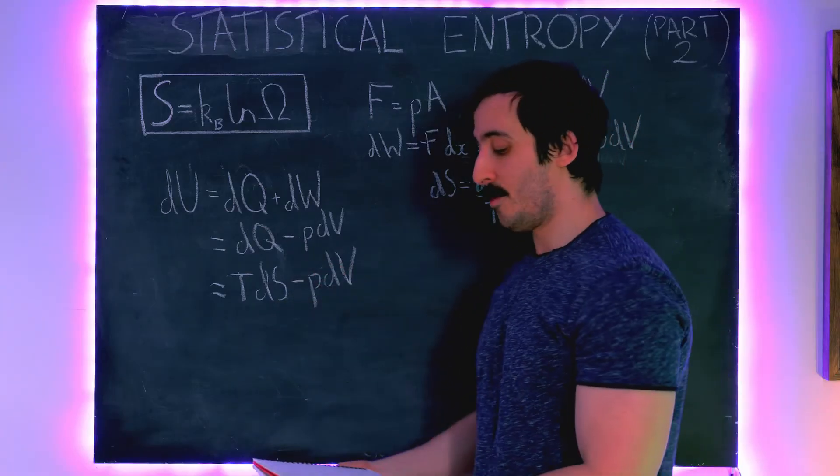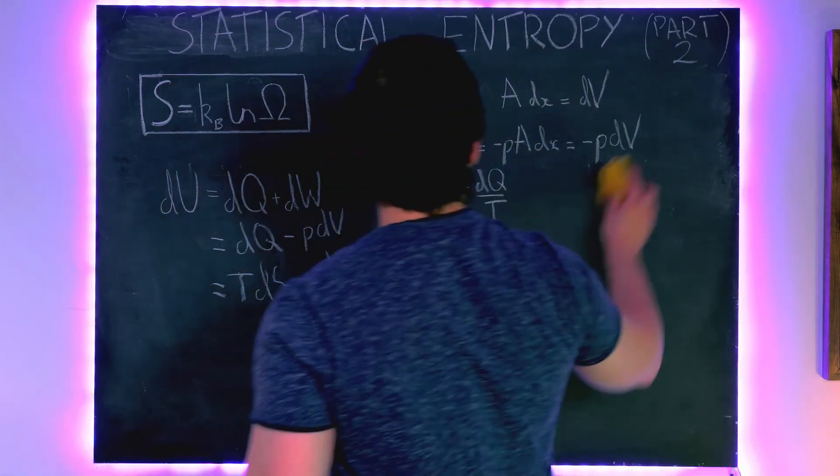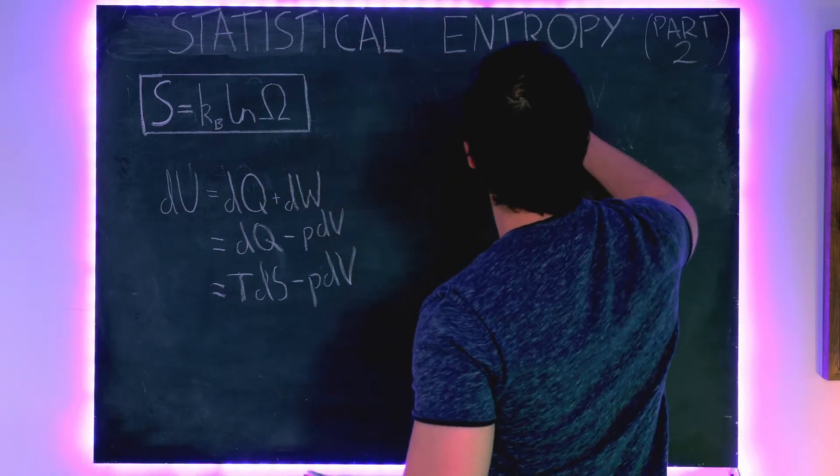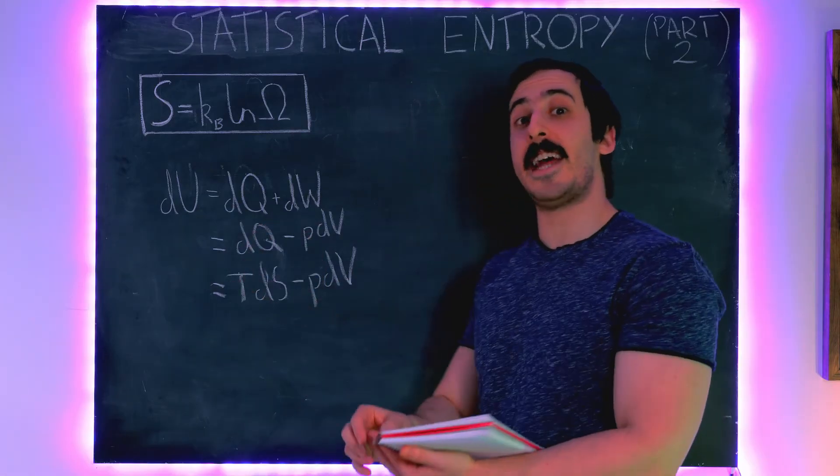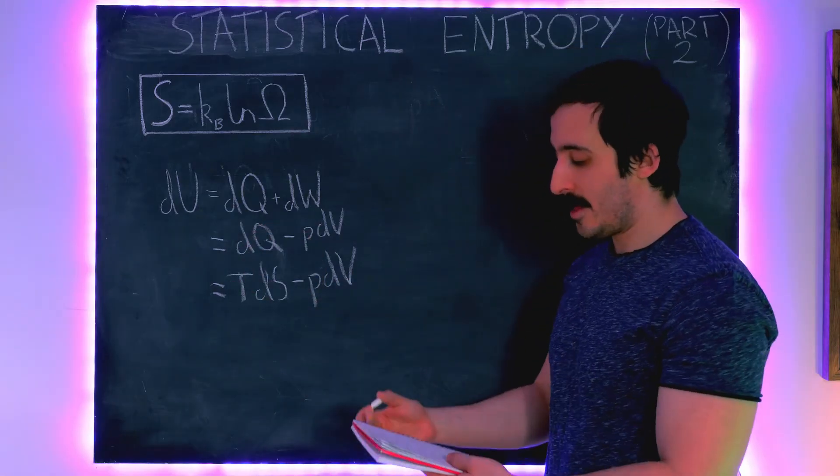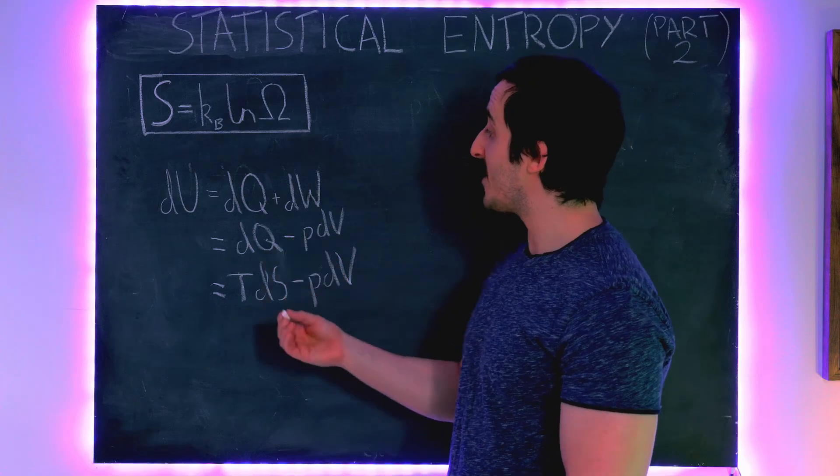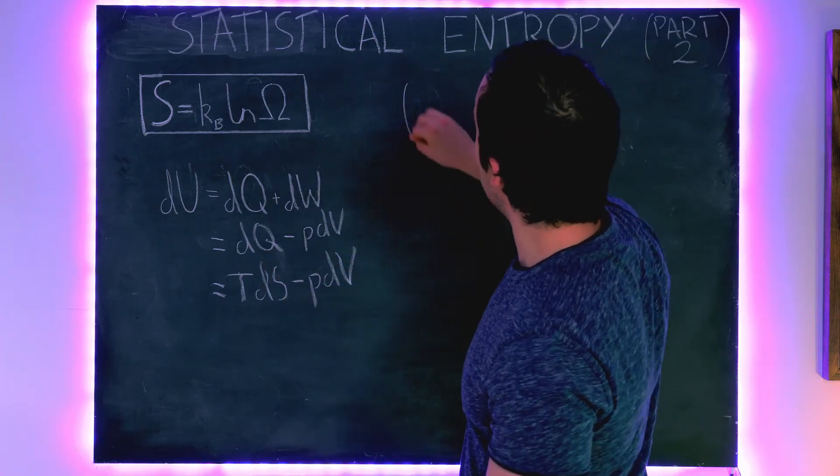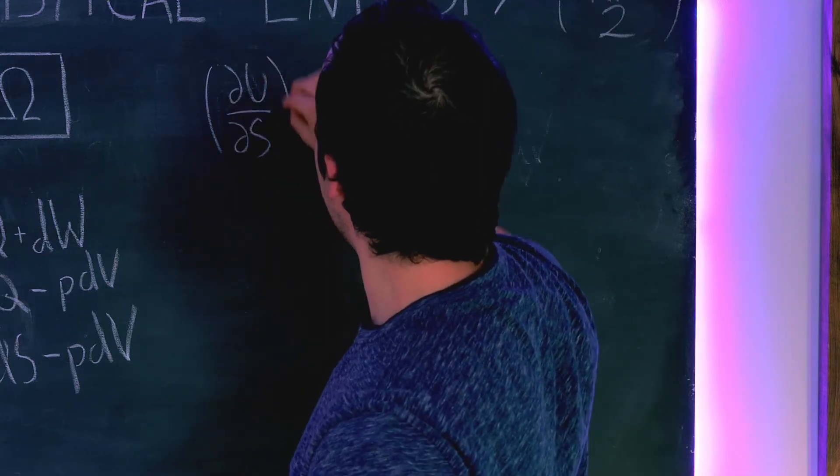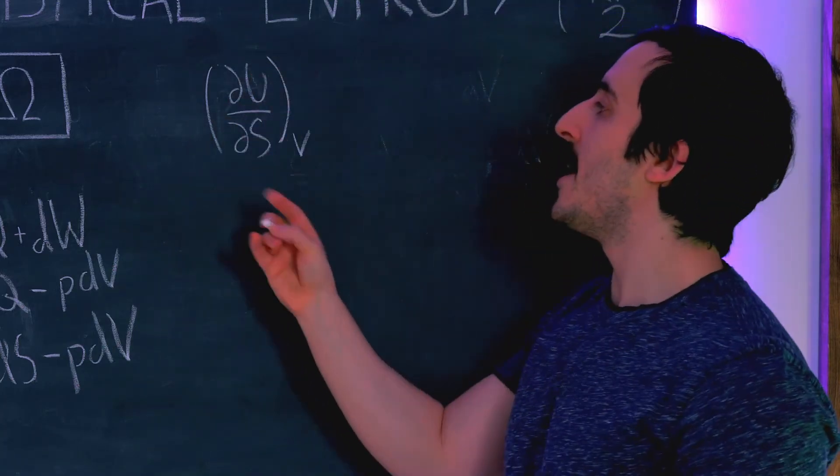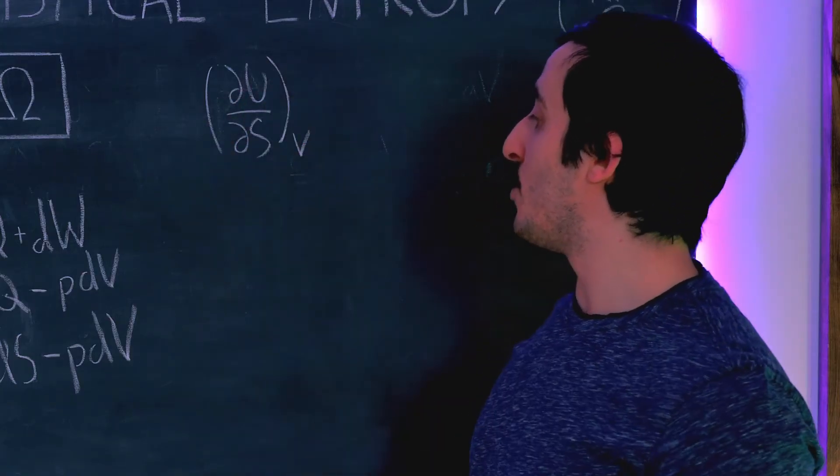Right so the next thing we're going to do is we are going to say let's keep the volume of our system constant, let's hold it at a constant volume and let's work out the change in our system with regards to entropy. So what we're working out is dU by dS at constant volume right so these are partial derivatives and this is basically saying we are differentiating the internal energy with respect to the entropy holding the volume constant.